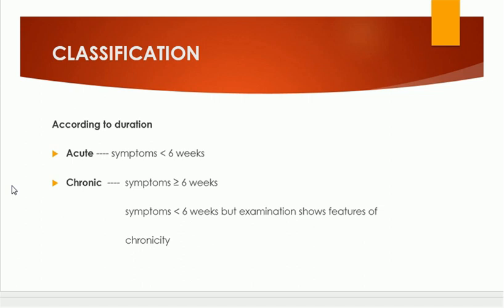Features of chronicity include a sentinel pile or anal tag at the lower end of the anal fissure. These are signs of chronicity and we label the fissure as a chronic fissure. This is one way of classifying the fissure as acute or chronic.